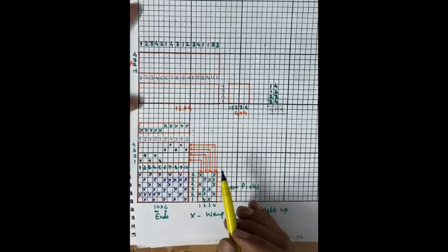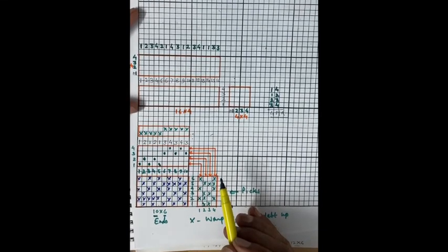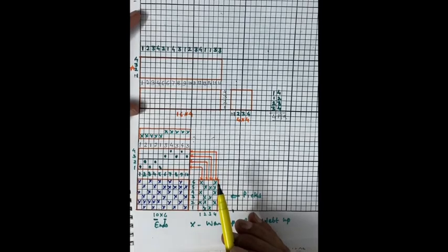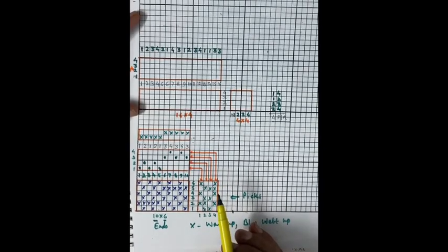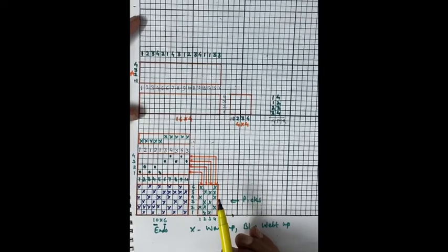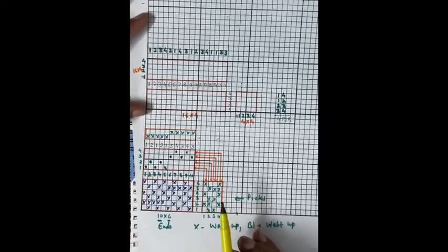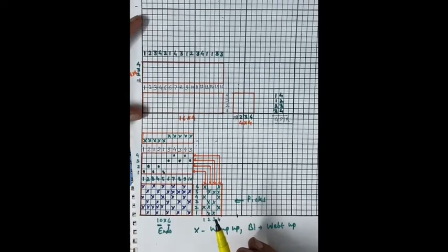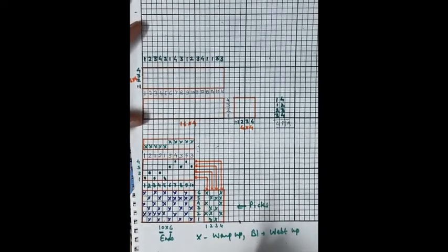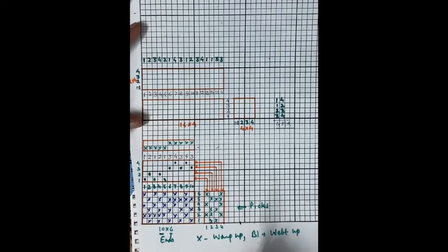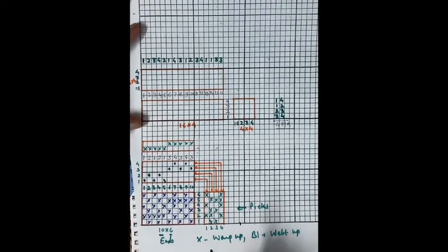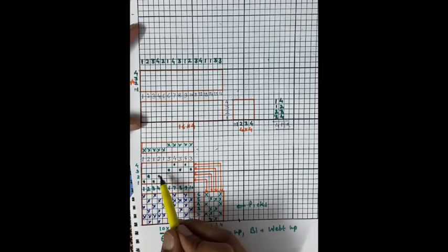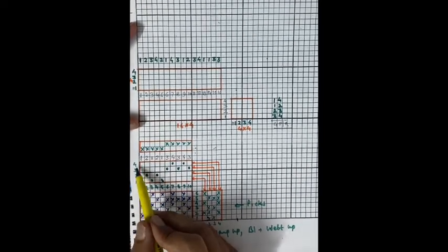Today we are taking another method of representation used for draft and lifting plan specially. Draft and lifting plan can be represented by another method known as the numbers method. In addition to the graph paper method, we use the numbers method for draft and lifting plan. In this method, the numbers indicate heald frame numbers. We will take the same example: a draft in numbers method with 10 ends and 4 heald frames.